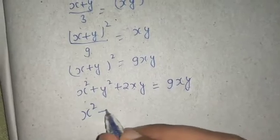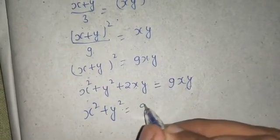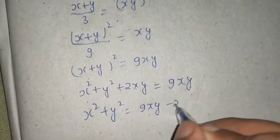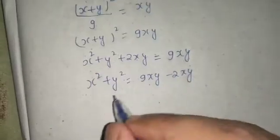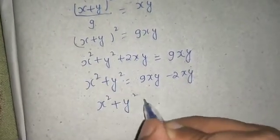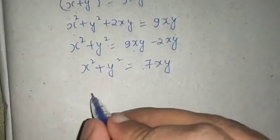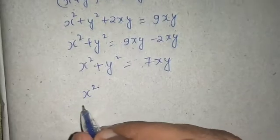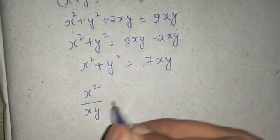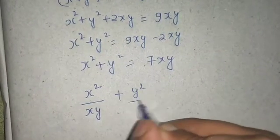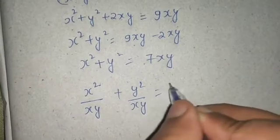Now I am getting x^2 + y^2 equals to 9xy minus 2xy. So if I simplify this, x^2 + y^2 equals to 7xy. Now if I divide both sides by xy, I will get x^2/xy + y^2/xy equals to 7.